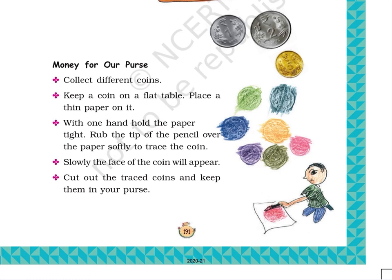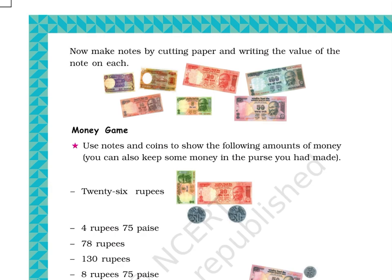Page 192. Now make notes by cutting paper and writing the value of the note on each. The picture below shows 7 currency notes: 1 rupee, 2 rupees, 5 rupees, 10 rupees, 20 rupees, 50 rupees, and 100 rupees.